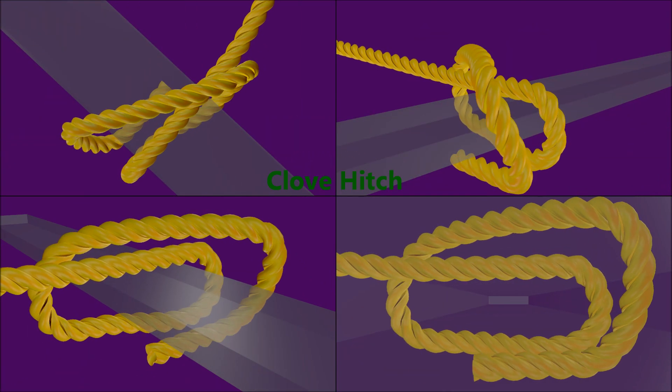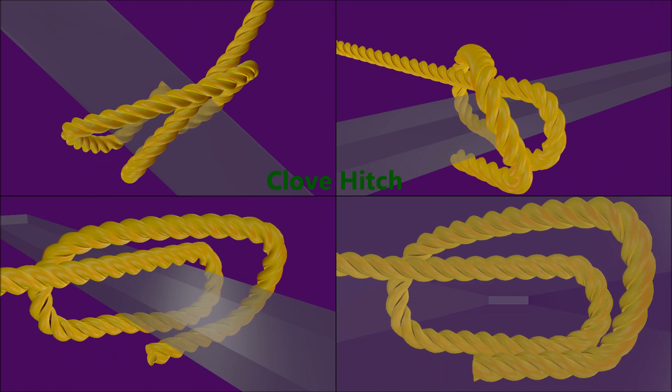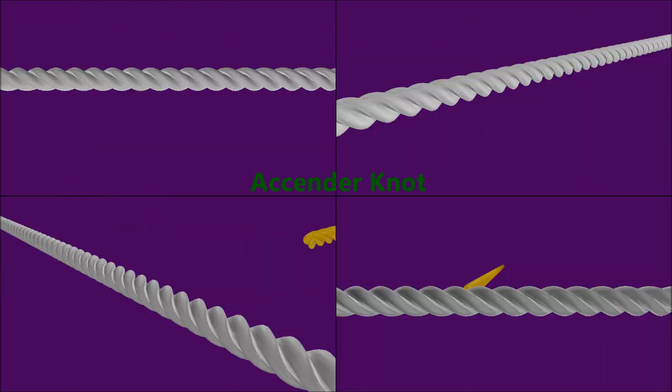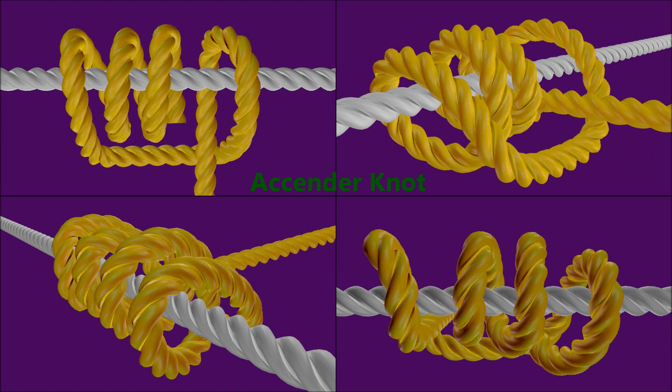The clove hitch has the same use as the timber hitch and is used to finish lashings. This knot will slide in only one direction and is used for climbing.